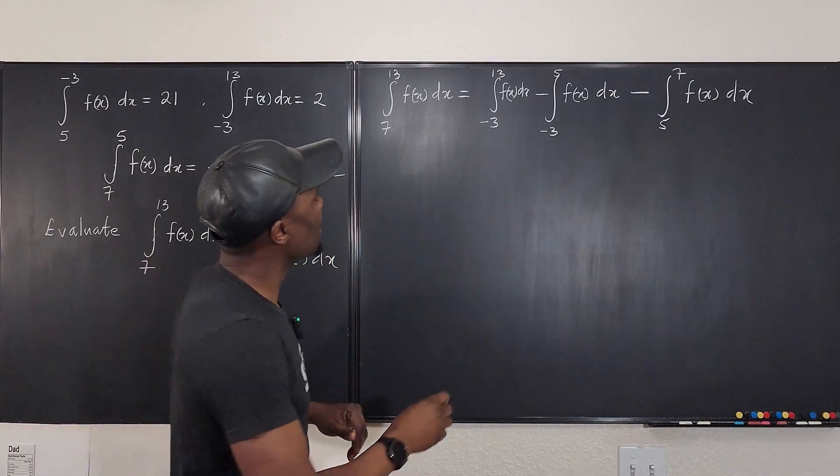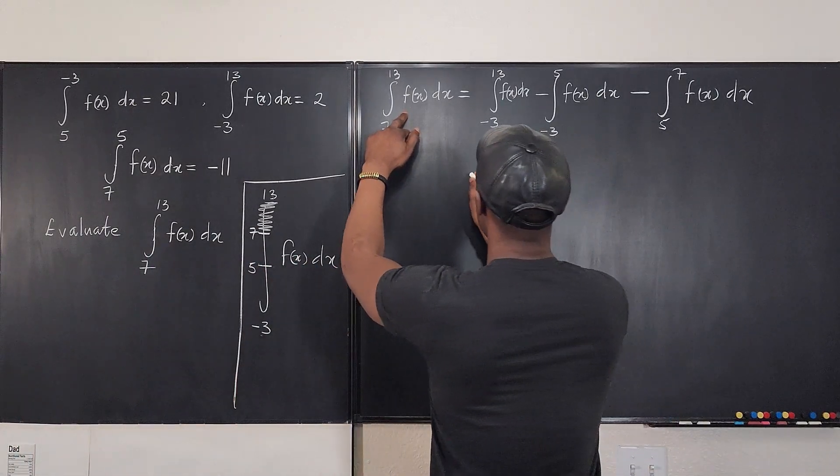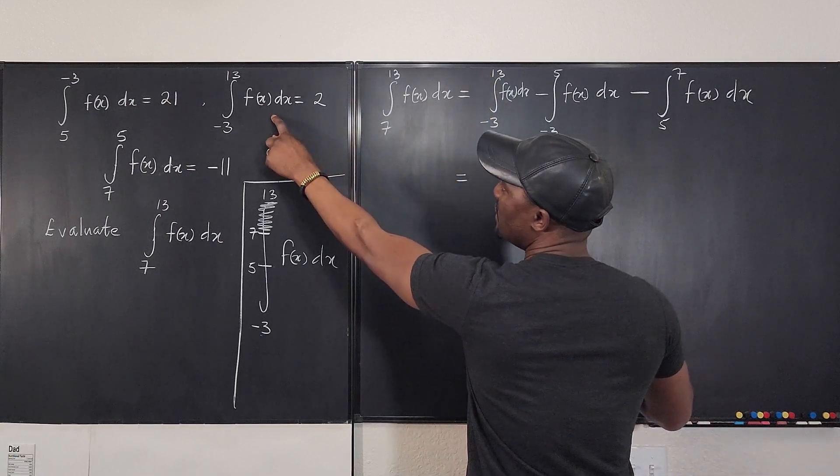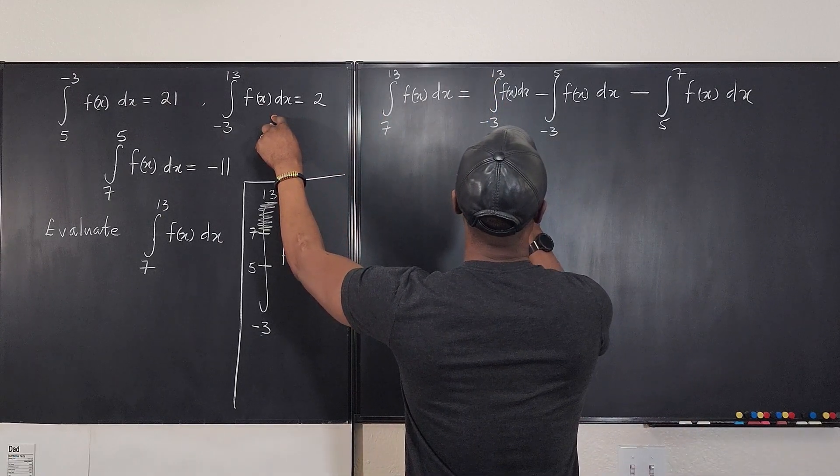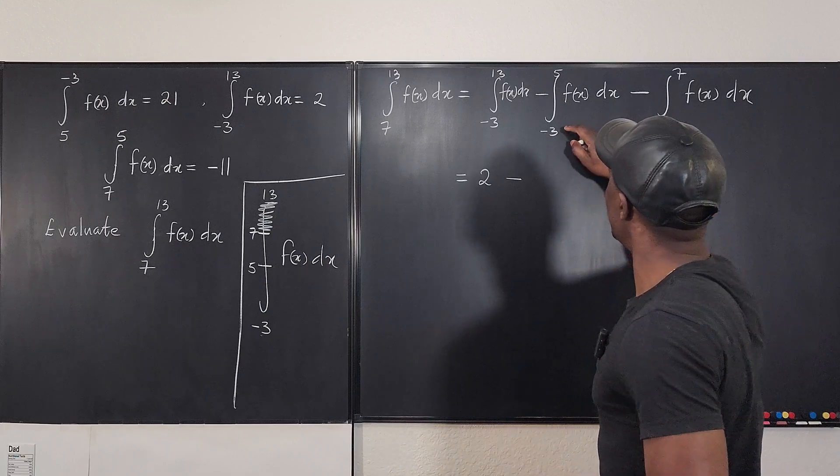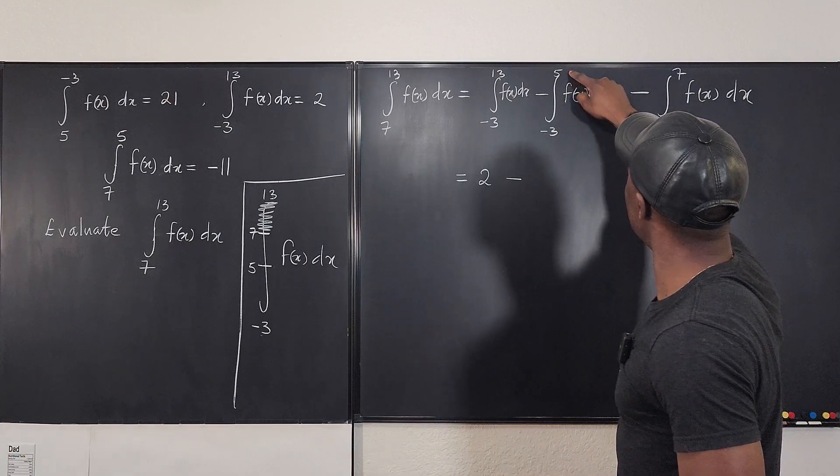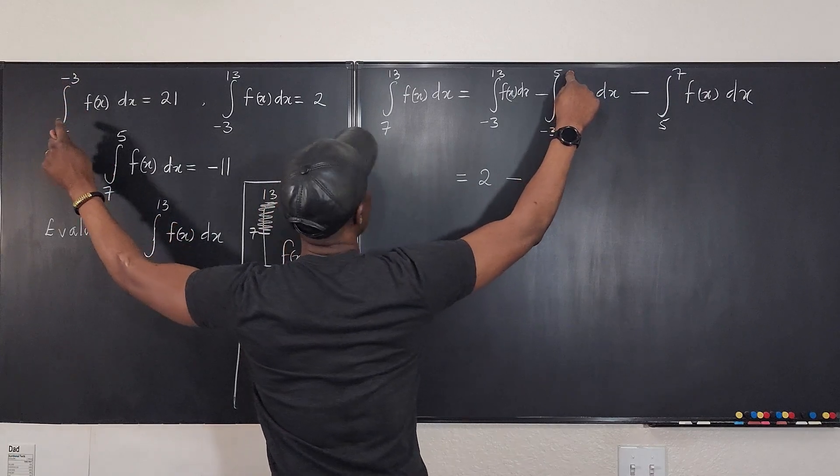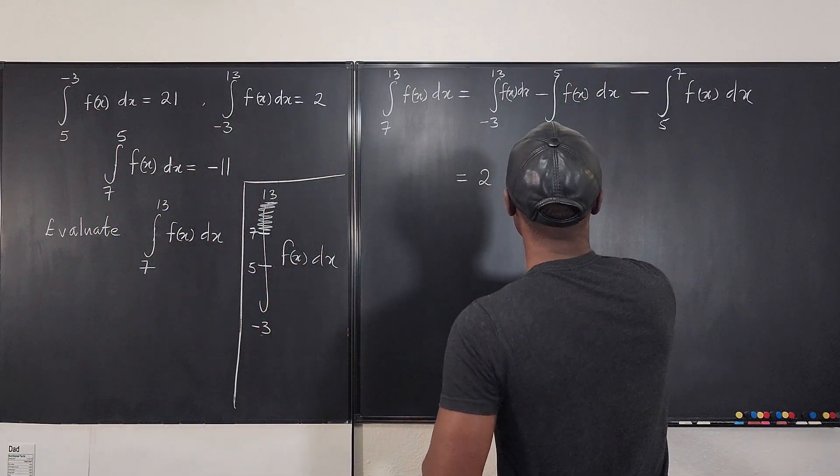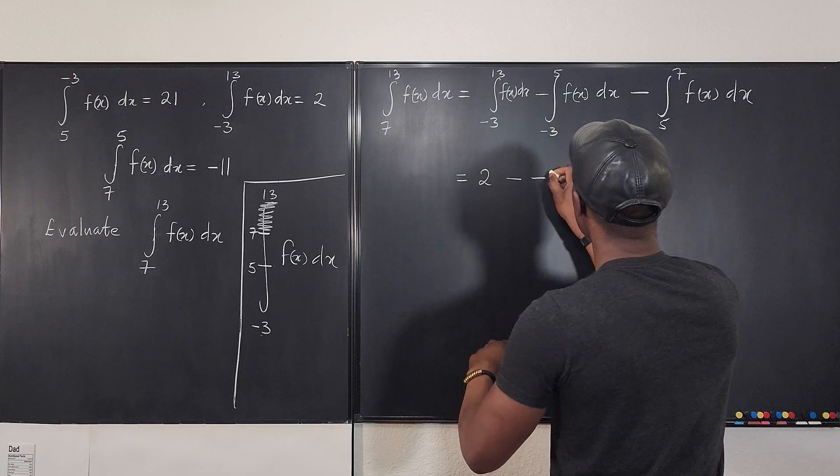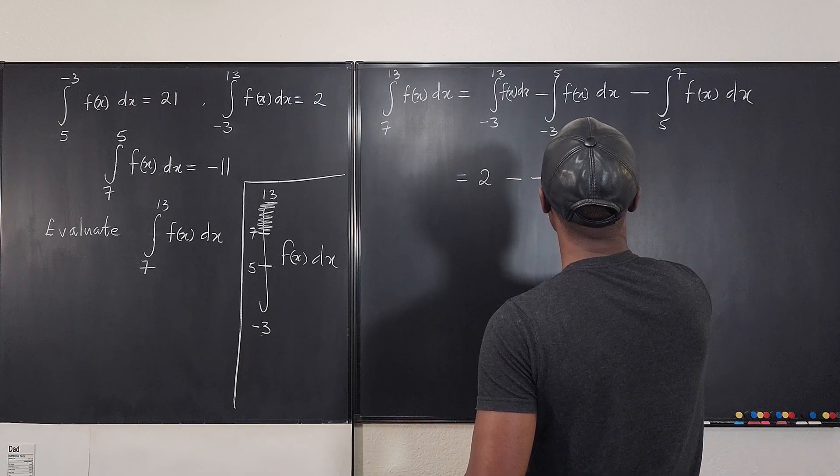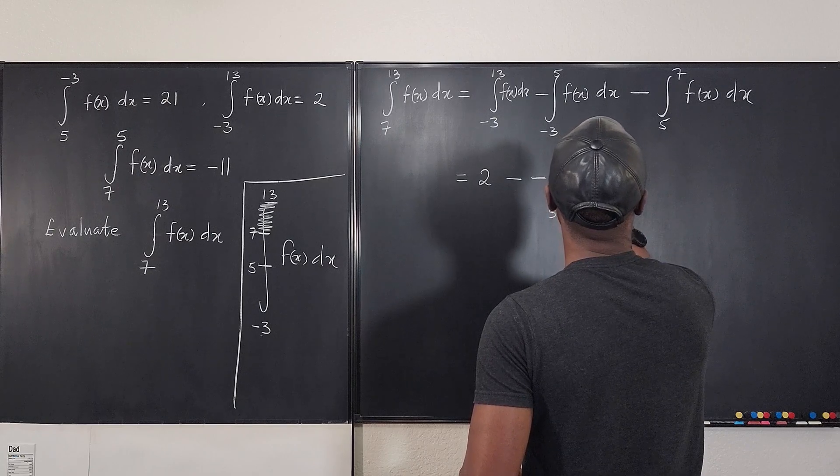So I'm looking for this guy. This is going to be... Do I have from negative 3 to 13? Definitely. That's 2. Minus. Do I have the integral from negative 3 to 5? I don't. But I have from this. So it's going to be minus... So this minus sign is going to be minus the integral from 5 to negative 3 of f(x) dx.